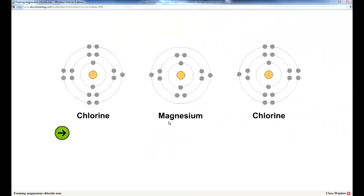If we take a look at this example, we have magnesium and two chlorine atoms. Now magnesium has two valence electrons in its outer level. Each chlorine has a total of seven valence electrons.